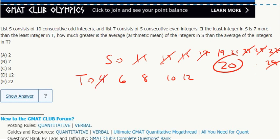Well what's the average of set T? You can just cross off and the one you're left in the middle is 8. So the difference between the two averages is 12.